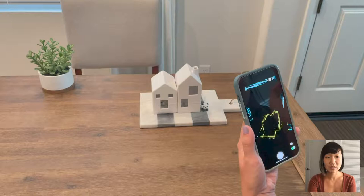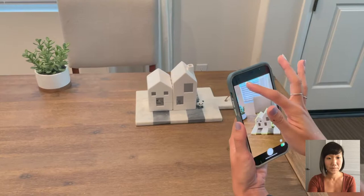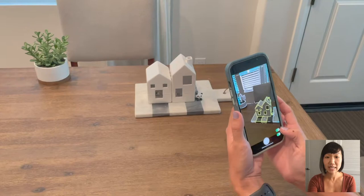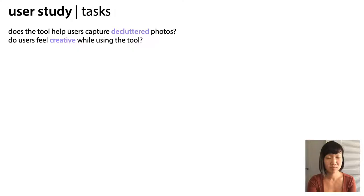By default, the app shows the edges around the subject and image borders with a black background. The user can adjust the slider at the top to bring in more or less of the image color. They can toggle to bring in the remaining edges in the subject and background. They can also turn off the visualization by holding a finger down anywhere on the screen or using the toggle at the bottom right.